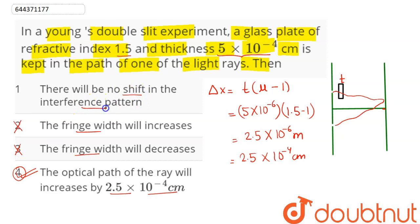And, option 1 says, there will be no shift in the interference pattern. As we know here, with introduction of this glass slab, there will be shifting in the interference pattern towards the direction of the glass slab, that is, upward. So, option 1 is also incorrect.